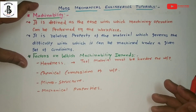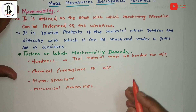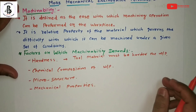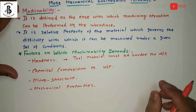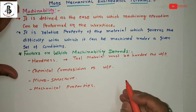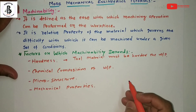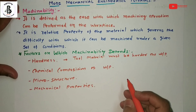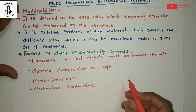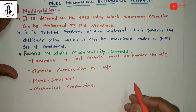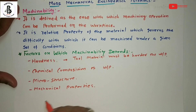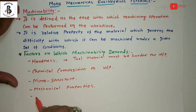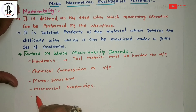The fourth factor is mechanical properties — such as elasticity, plasticity, and toughness of the workpiece material. These are major factors that affect the machinability of the product. Following that, cutting tool conditions are also an important factor.